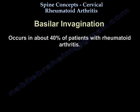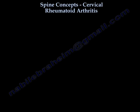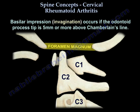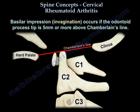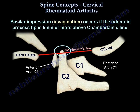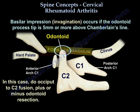The second condition is basilar invagination, which occurs in about 40% of patients with rheumatoid arthritis. Basilar invagination is superior migration of the odontoid, so the tip of the odontoid rises above the foramen magnum. In this case, the operation is occiput-to-C2 fusion, plus or minus odontoid resection.